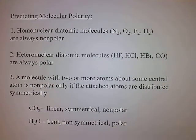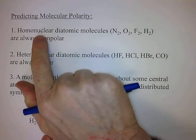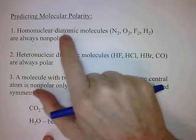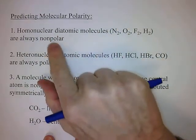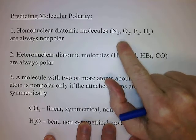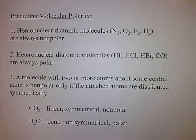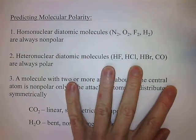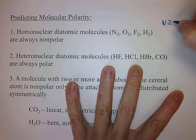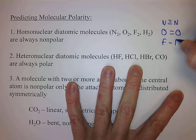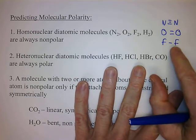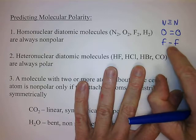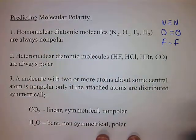How do you predict whether a molecule is polar or not? First of all, any homonuclear diatomic molecules are always nonpolar — N2, O2, F2, H2 are always going to be nonpolar. What makes a molecule polar is an uneven distribution of electrons. If the two atoms are the same — an NN bond, OO bond, or FF bond — the bonding electrons will be shared equally. That's what makes it nonpolar.